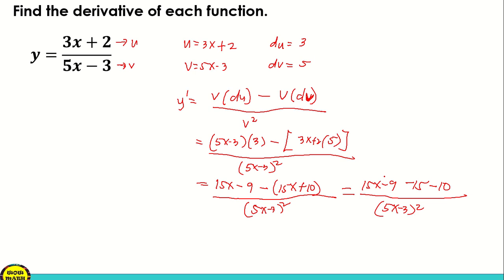So 15x and this 15x will cancel each other out. What remains is negative 9 minus 10. Negative 9 minus 10, the answer is negative 19, all over 5x minus 3 squared. So that is our derivative. So y prime is equal to negative 19 over 5x minus 3 squared.